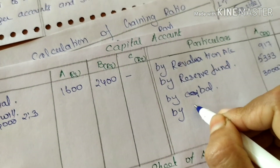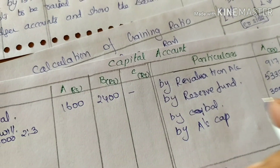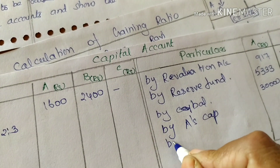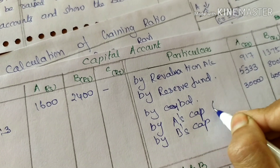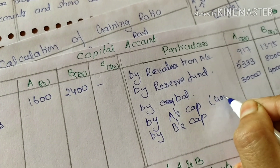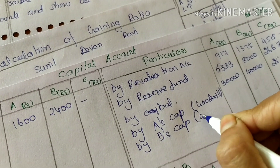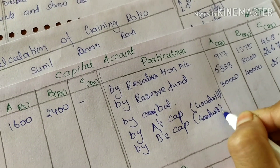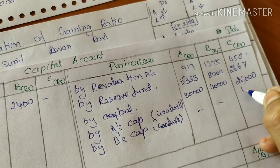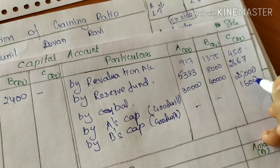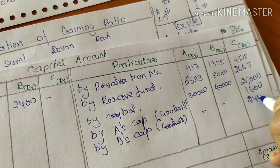Goodwill capital account entry: C's capital is credited with 4,000 (goodwill share). A's capital is debited with 1,600 and B's capital is debited with 2,400, as they absorb C's goodwill in the new ratio of 2:3.